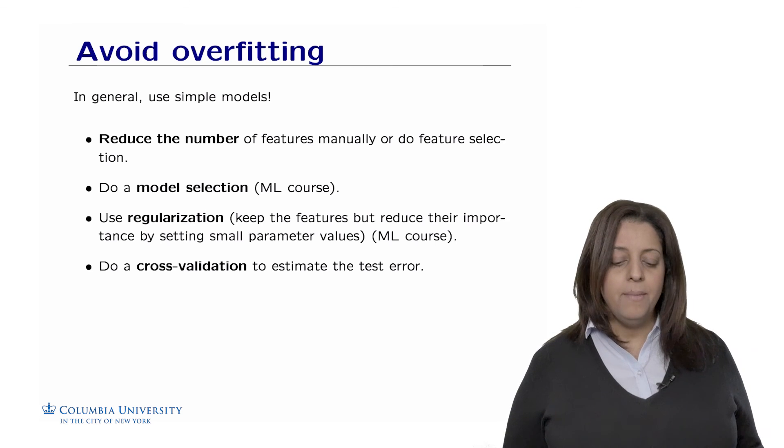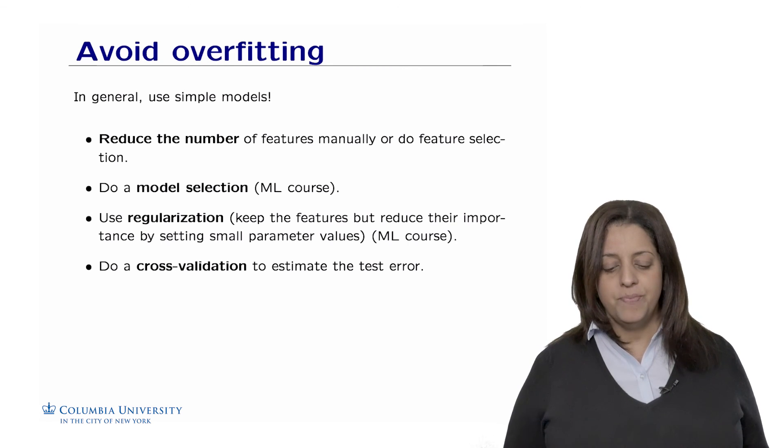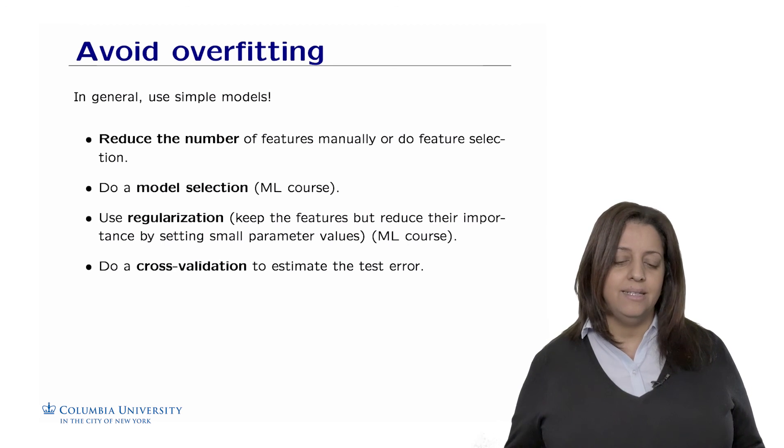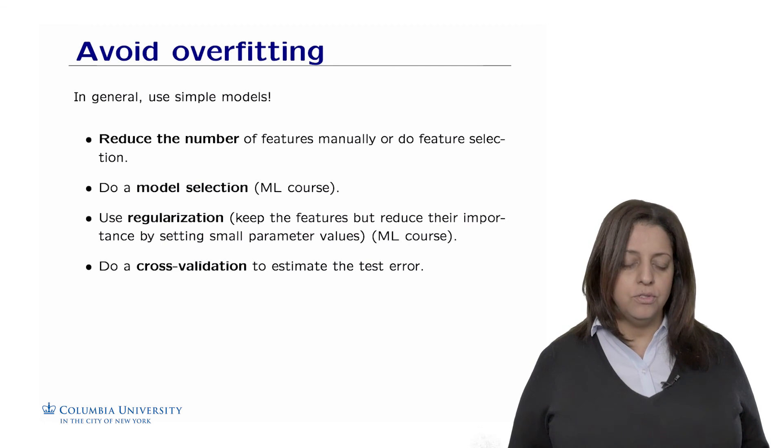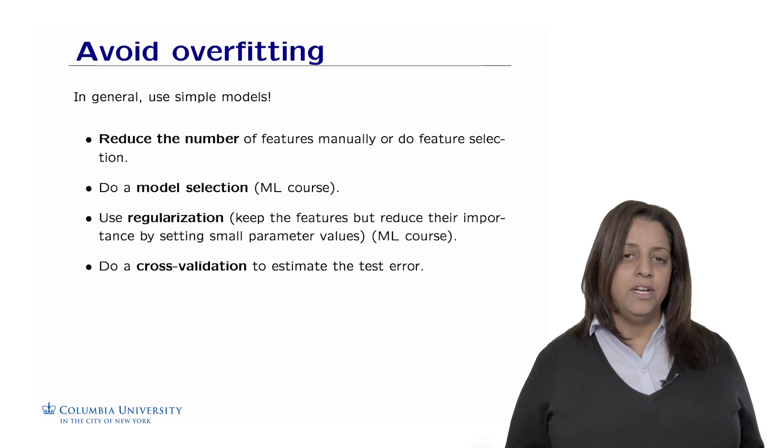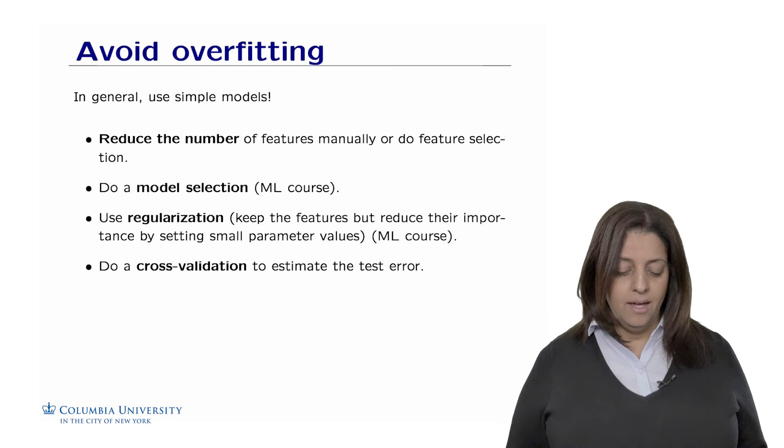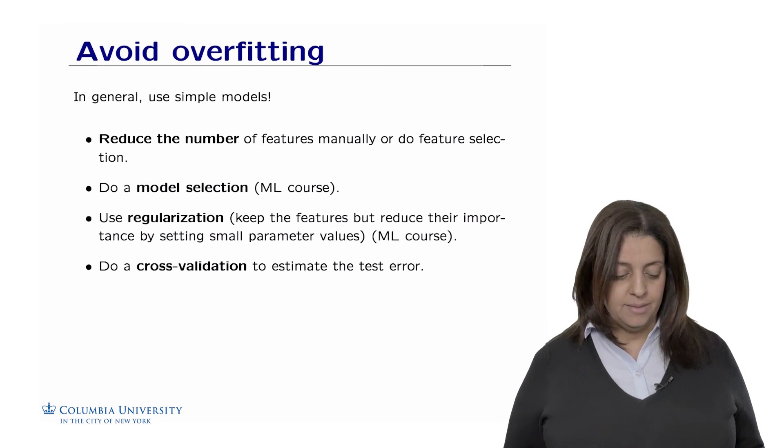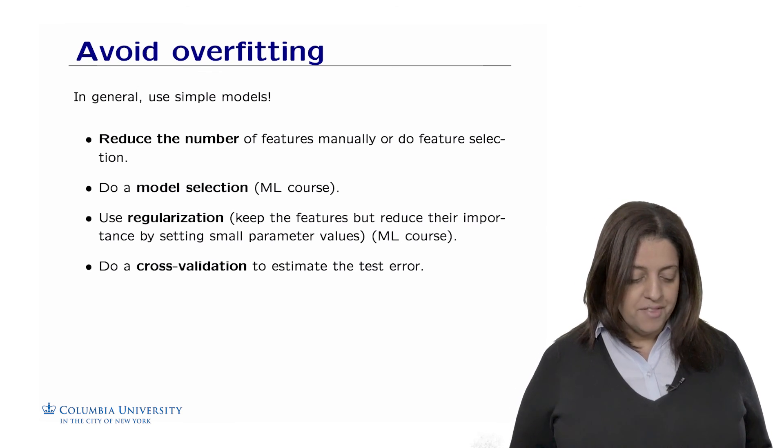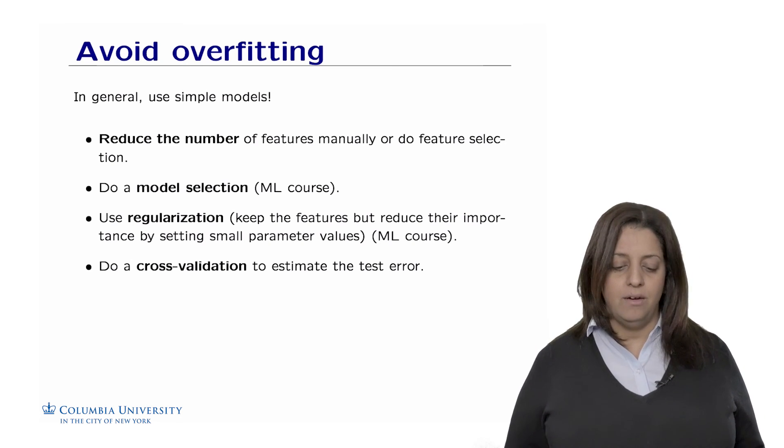However, let's reduce the importance or the impact of the small parameter values. So if you have lots of features that contribute a little bit, a little bit to the model, let's try to regularize that. So we're going to make a balance between learning the data and also having all the features having an impact on them, reduce their importance in the final model. The last possible thing we can do is to do what we call a cross-validation, which is to estimate the test errors. And we'll see in a bit what this means.